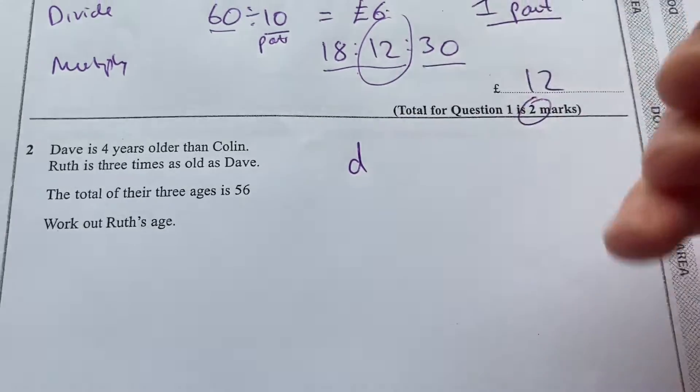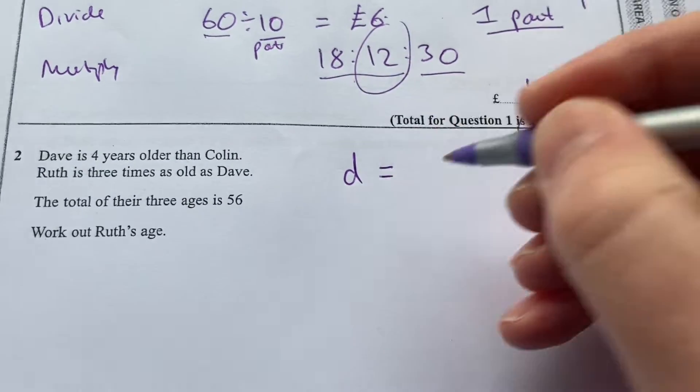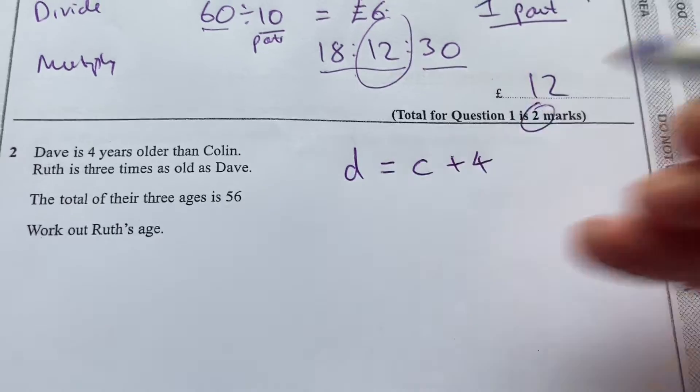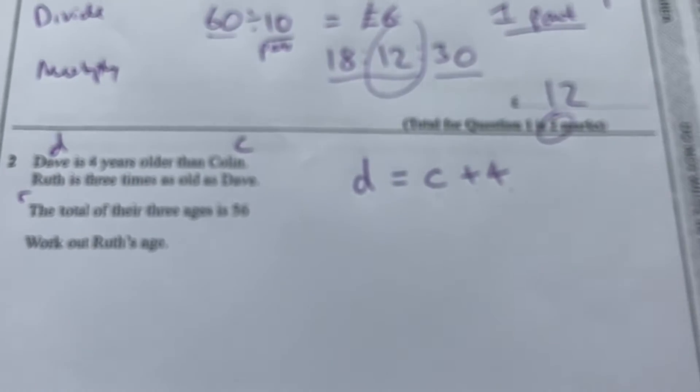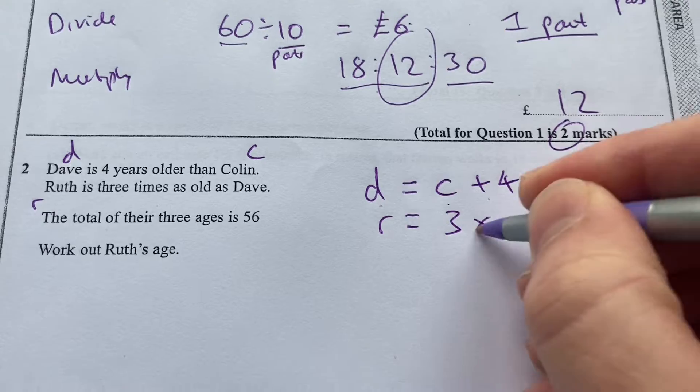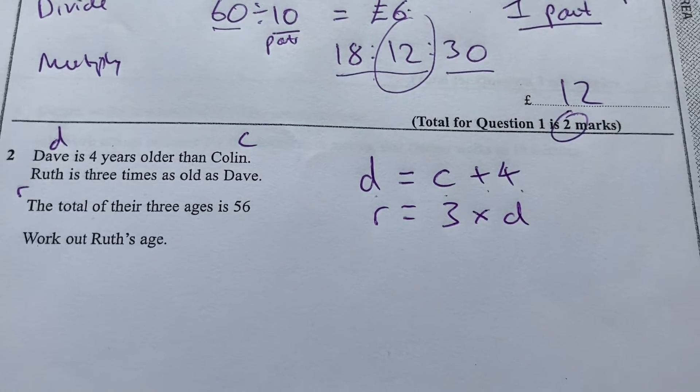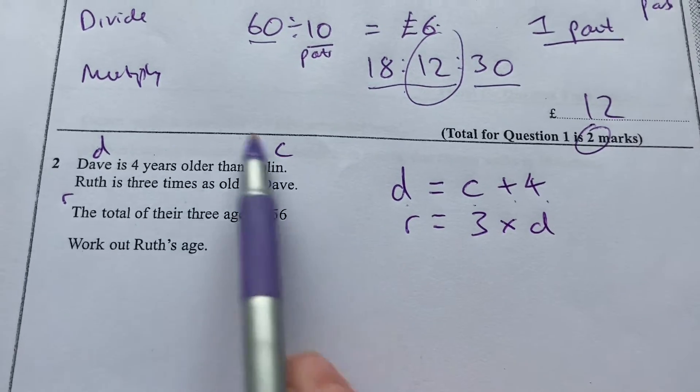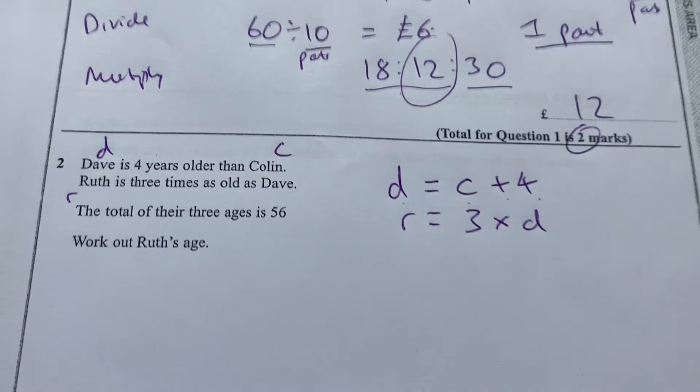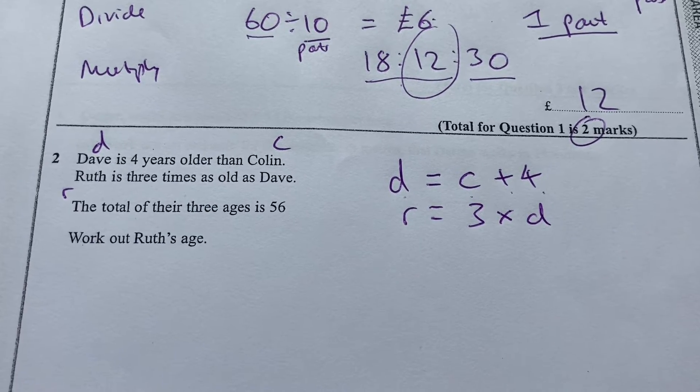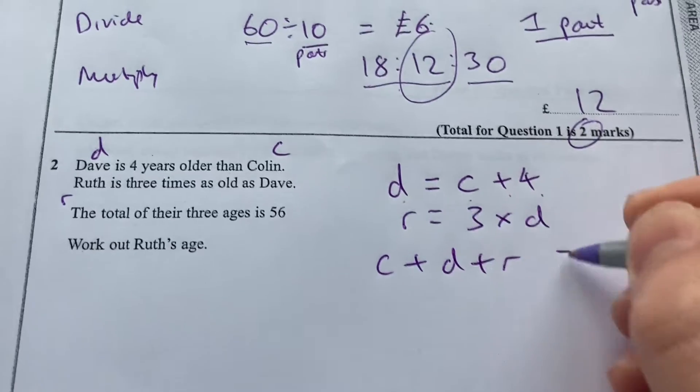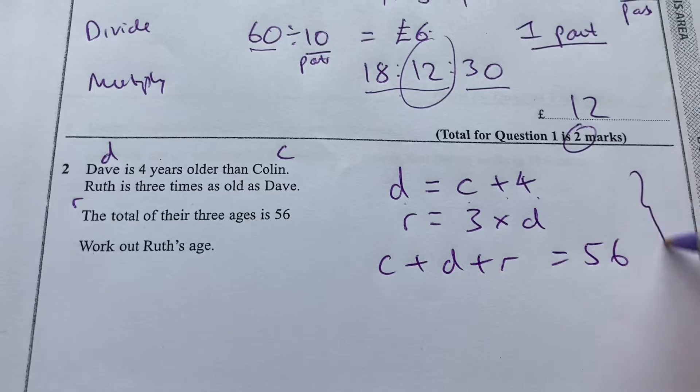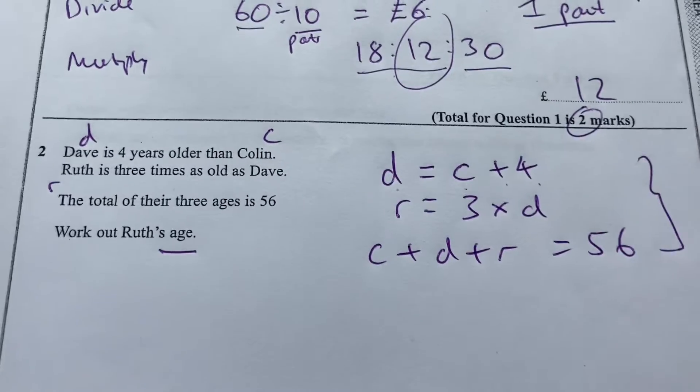Dave, I'll call him D, is 4 years older than Colin. So put that into equation. So Colin plus 4 is Dave. So I'm putting Dave with a D, Colin with a C, Ruth with an R. Ruth is then 3 times as old as Dave. So I'm turning this all into equation. That's the wonder of maths. You can take these words and put them into equations like that. The total of their three ages is 56. So C plus D plus R equals 56. So now we're going to combine those equations to work out Ruth's age.